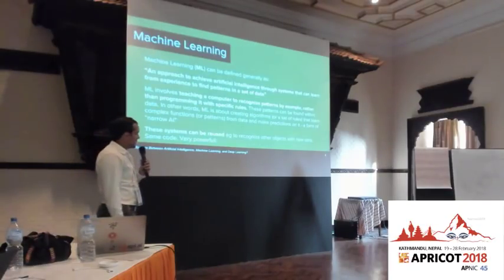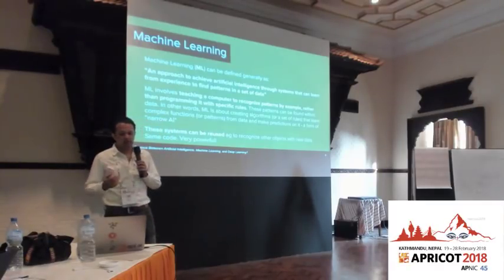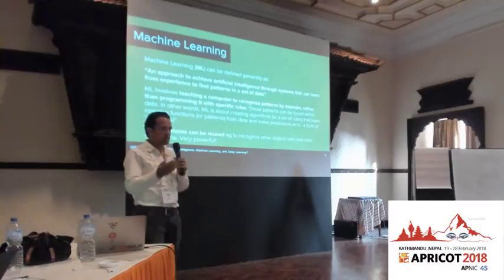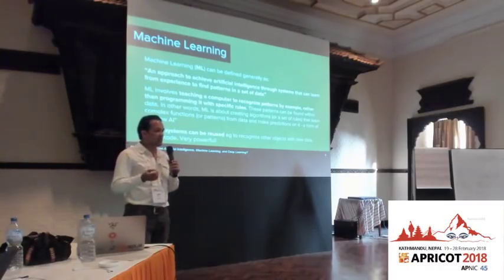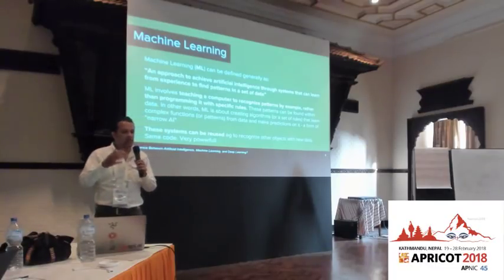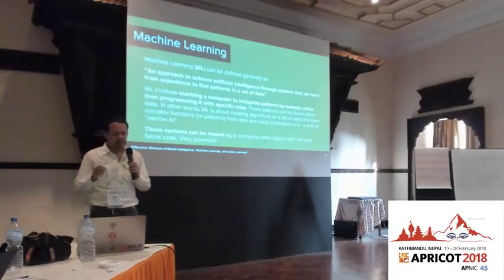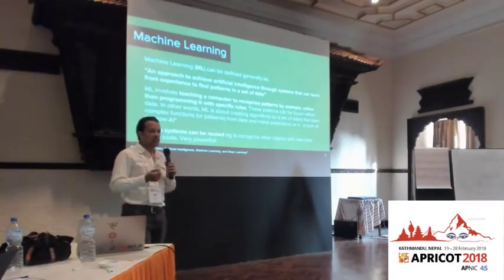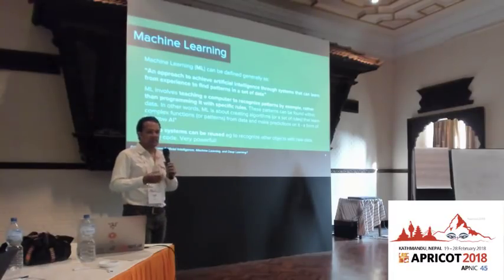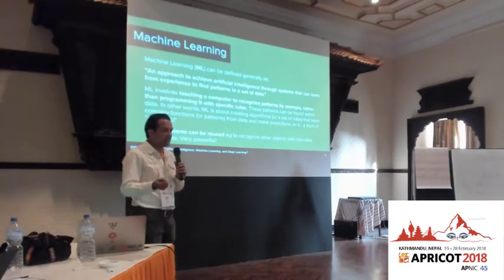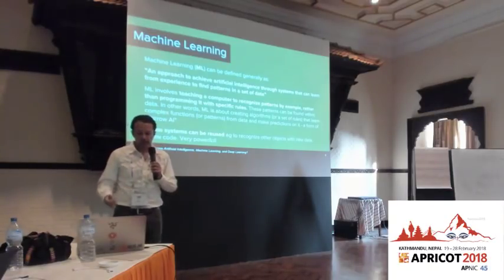So let's define machine learning. ML is an approach to achieve artificial intelligence — it's a program that can learn to find patterns in the data you present to it. It's at the implementation stage, if you will. Importantly, these systems can be reused: if I train a system to recognize dogs, I can use the same codebase to recognize cats just by giving it different training data. That allows us to reuse systems with great ease.